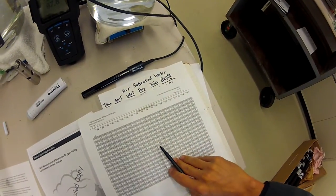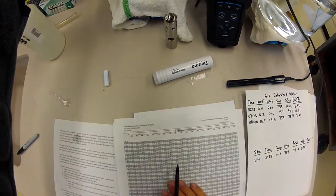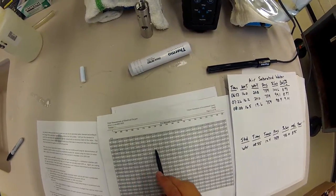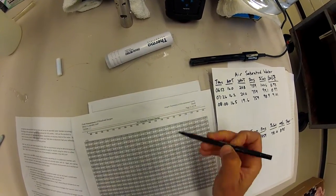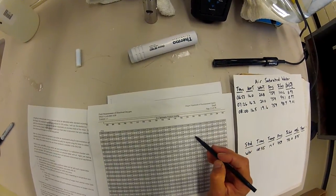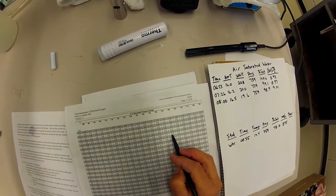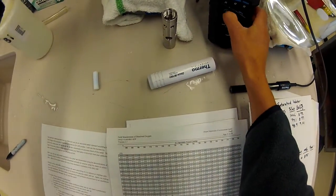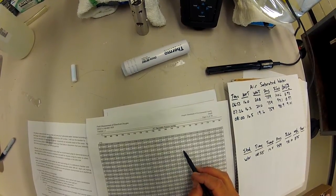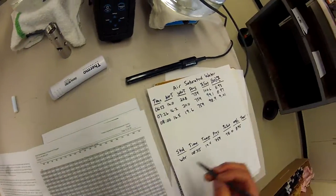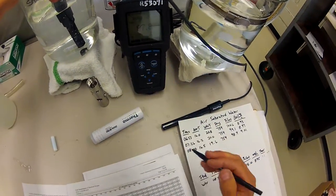I'm going to get a theoretical value for the temperature of 19.3. It's going to be about right in here, and a pressure of approximately 760. So 760 and 19.3 should be somewhere around, we're a little bit less than 760 and a little bit lower than 19.5. So we're going to be somewhere around 9.1 as a theoretical.